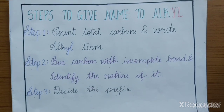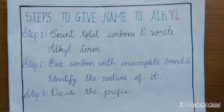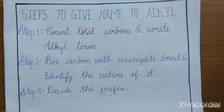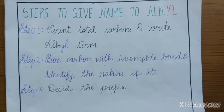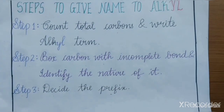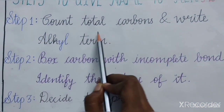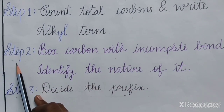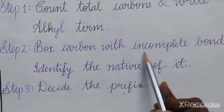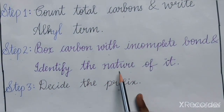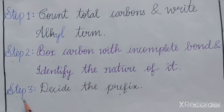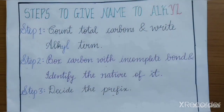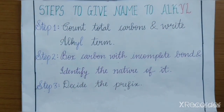Now we will learn how to name an alkyl and the steps in alkyl naming. If these steps are memorized, then it would be very easy to name any alkyl. Step 1: Count total carbons and write the alkyl term. Step 2: Box the carbon with incomplete bond and identify the nature of it. Step 3: Decide the prefix.